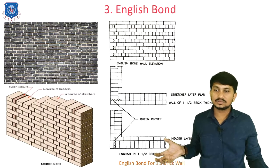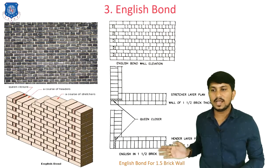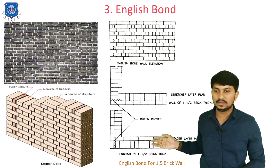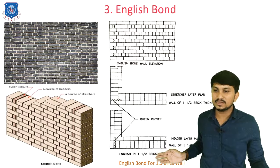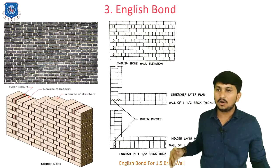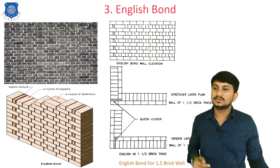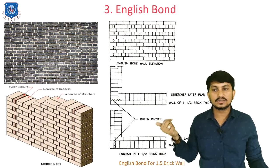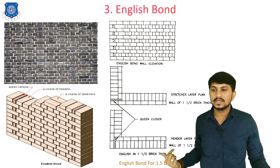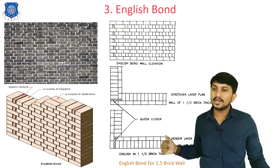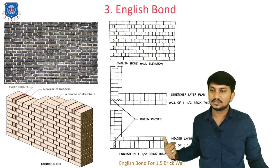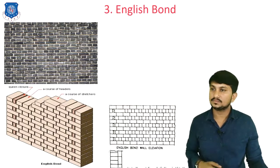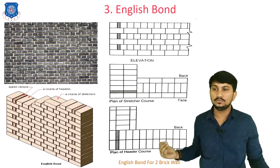In English bond, the facing part is the surface of the wall exposed to the external environment, and the behind portion is called backing. At the facing, you can see alternate layers of stretchers and headers, so the look of the English bond at facing is different from backing. Because at the facing, the first layer appears as header, while at backing, the first layer is of stretchers. So at facing and backing in English bond, the look is different.